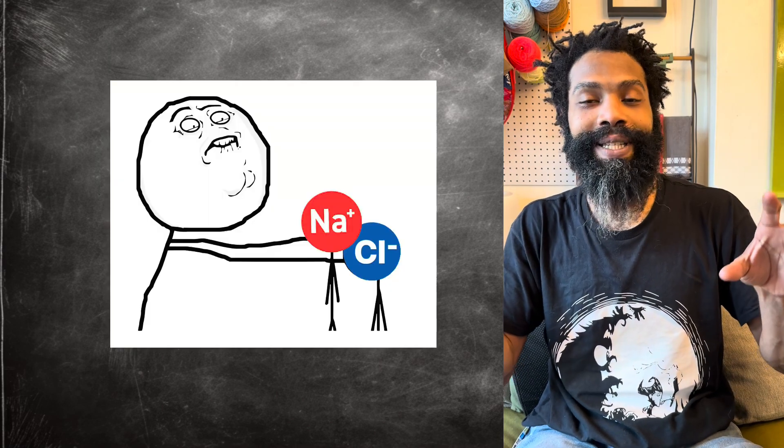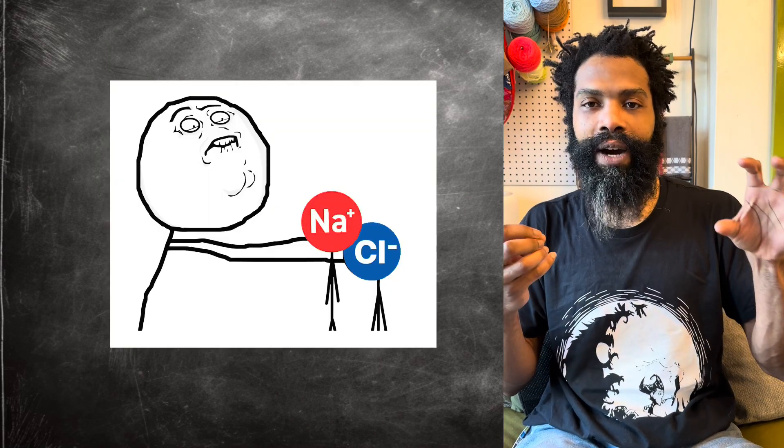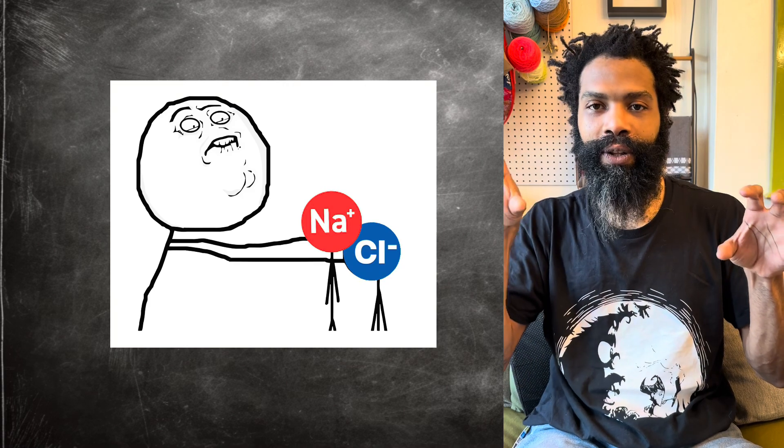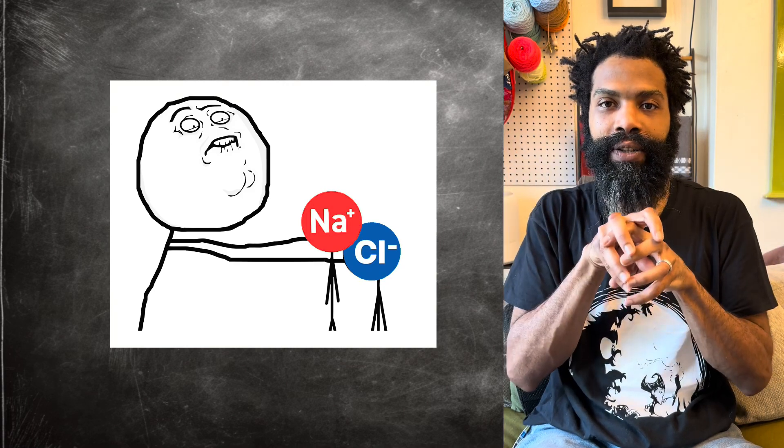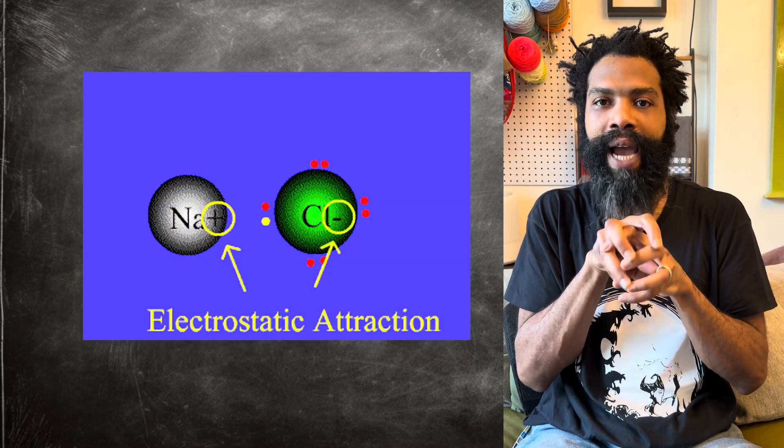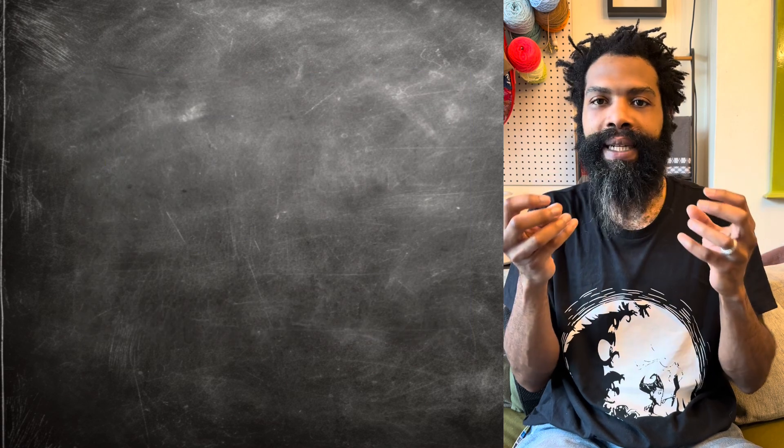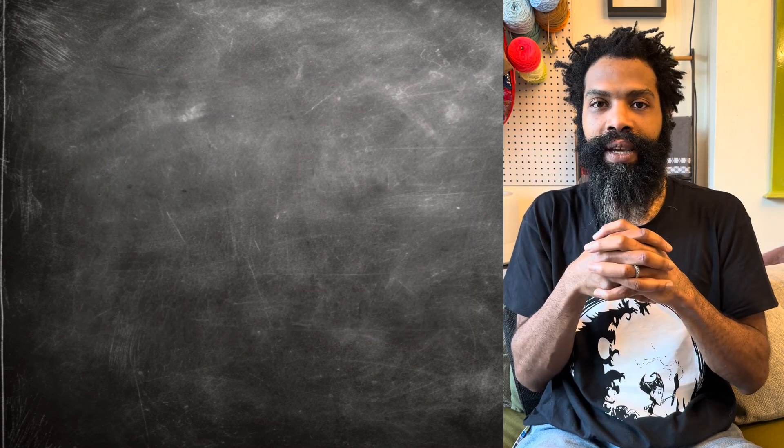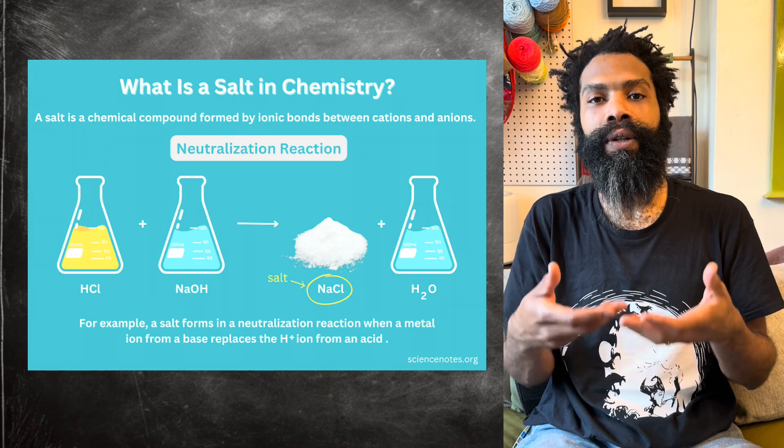But the other way that they can be neutral is if they come together. The positive charge of the sodium and the negative charge of the chloride attract each other, that same electrostatic attraction force that happens with magnets. And they stick to each other and form a compound called a salt.